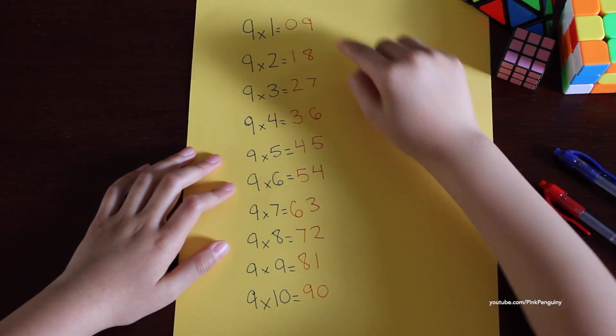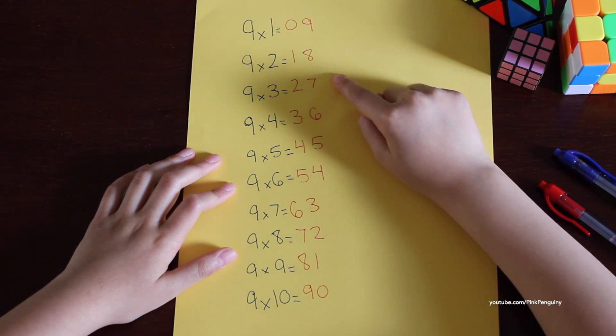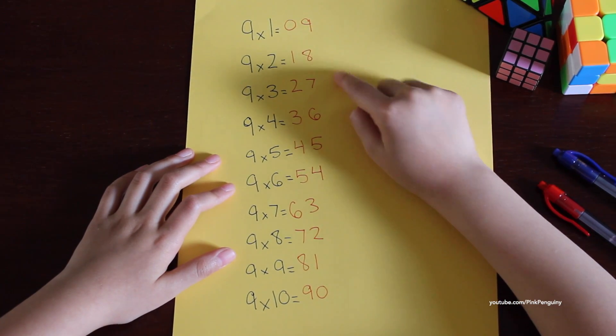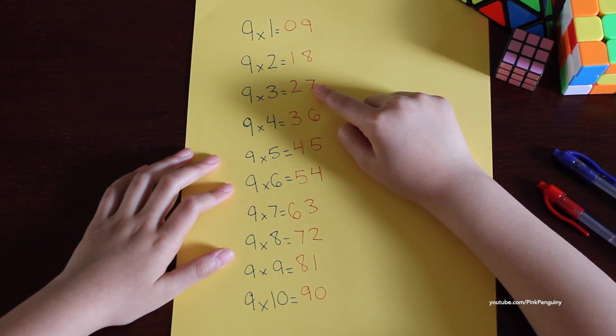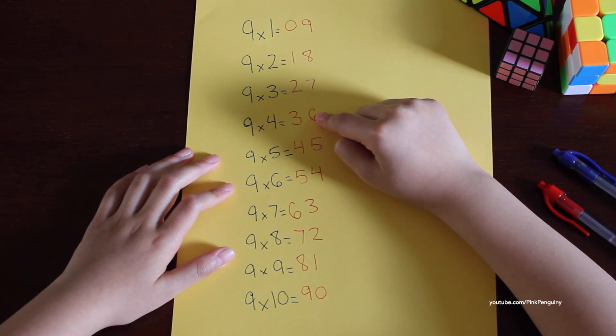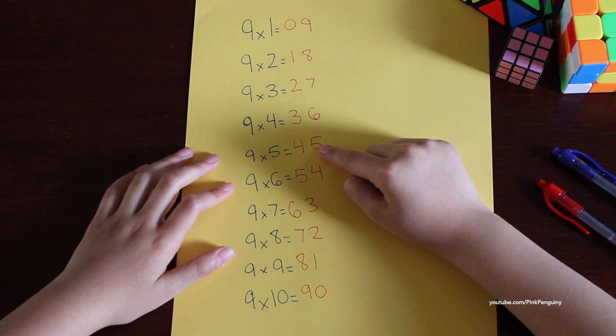One through ten. Nine times one equals nine, nine times two equals 18, nine times three equals 27, nine times four equals 36, nine times five equals 45.